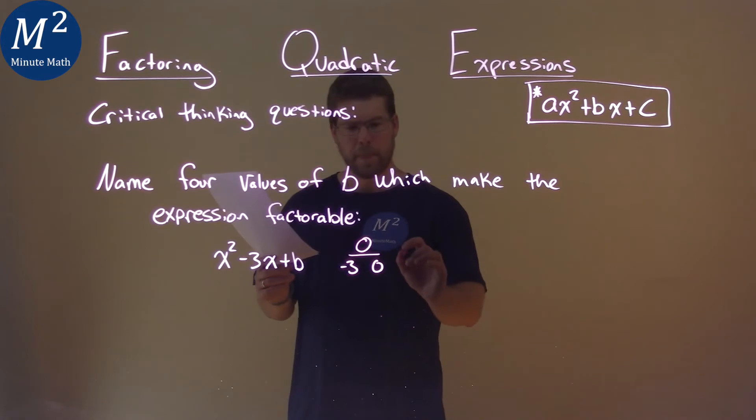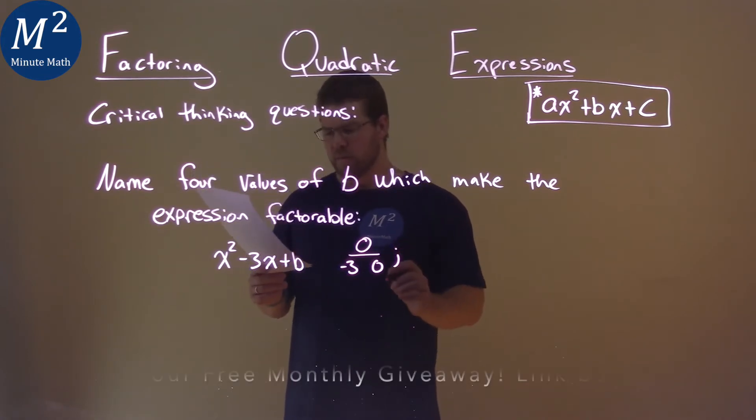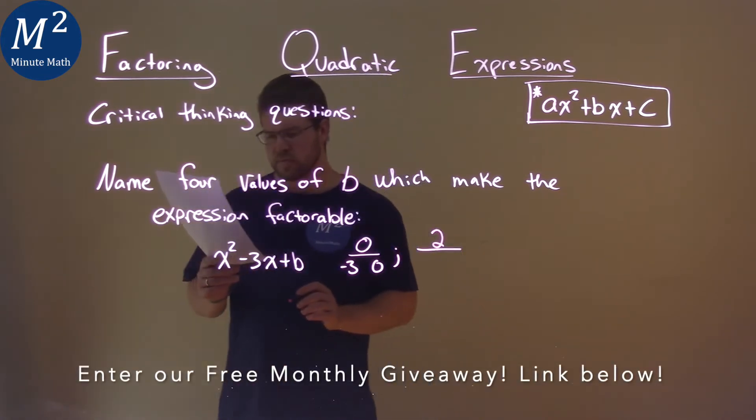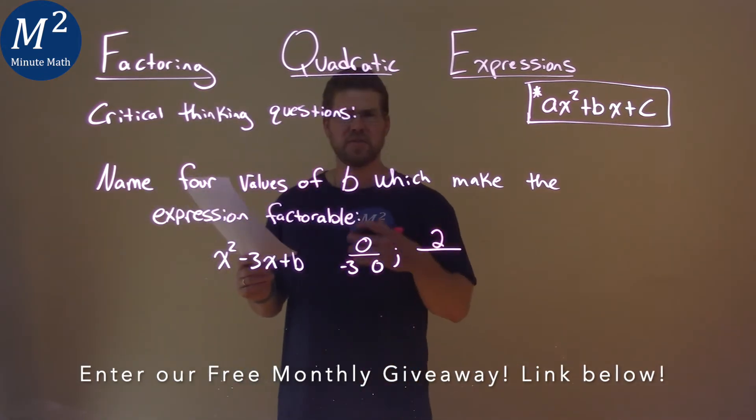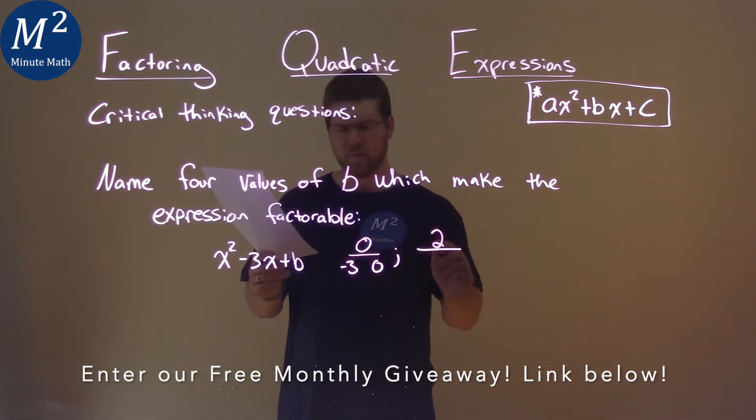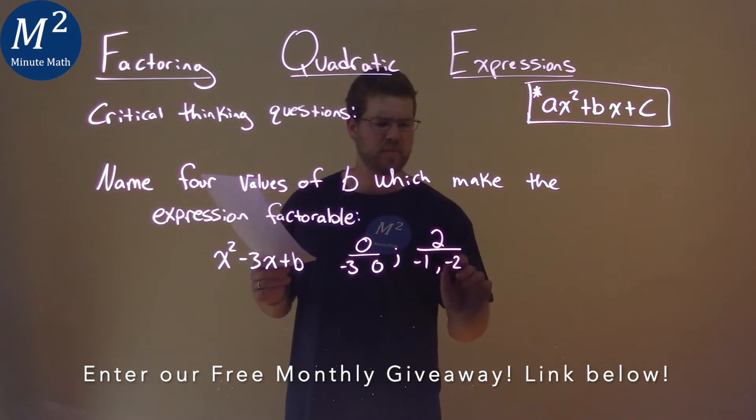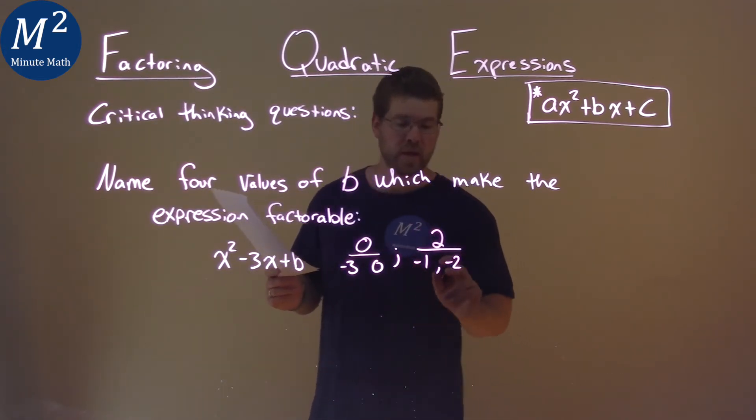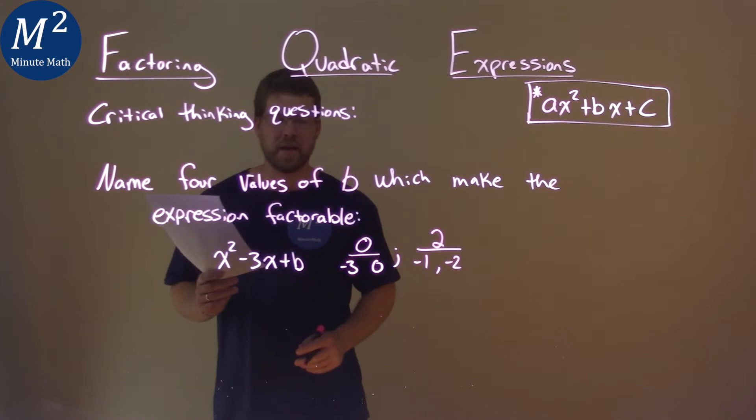What about another one? Well, what about 2? Two numbers multiply to be 2. Well, negative 1 and negative 2. Negative 1 times negative 2 is positive 2, but we add them together and we get negative 3.